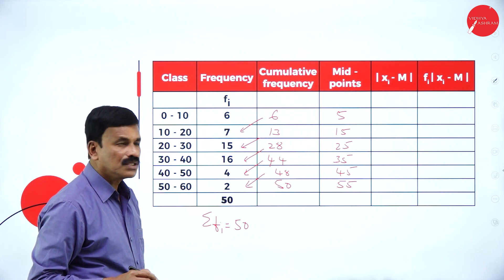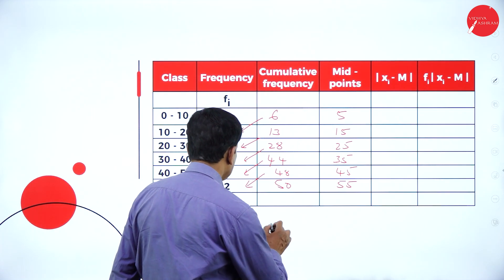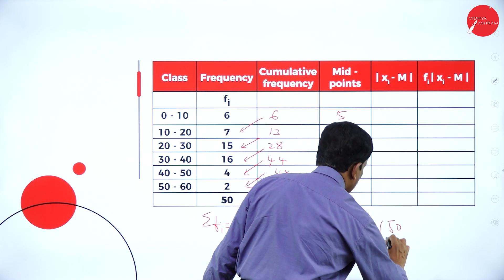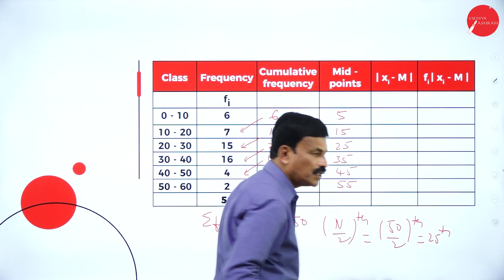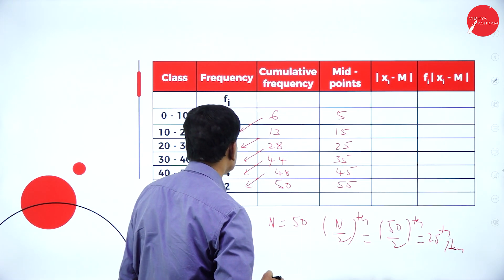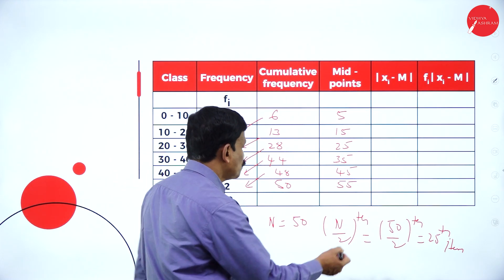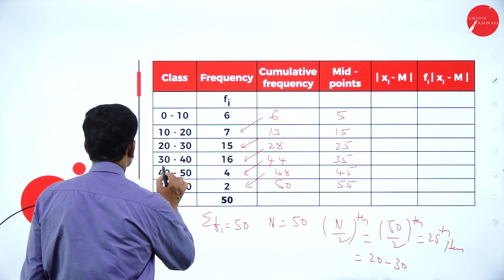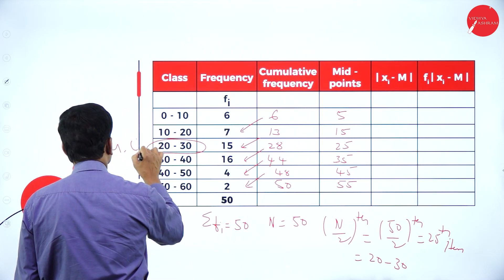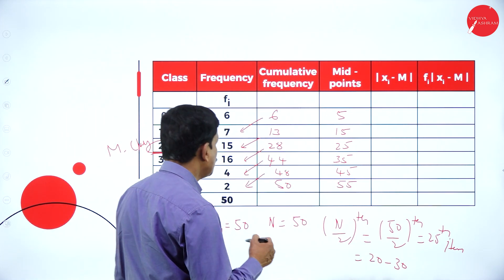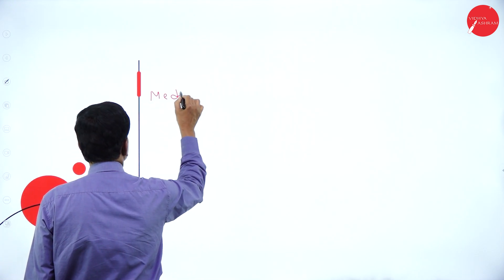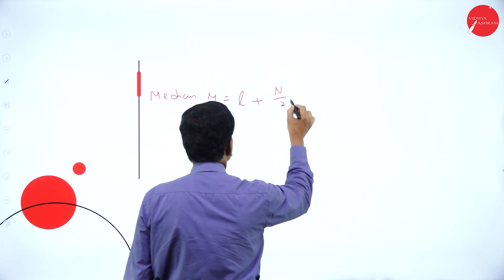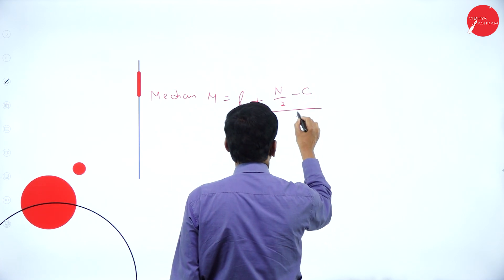Now to find the median, here n is equal to 50. So n by 2 means 50 by 2, that is the 25th item. The 25th item is less than 28, so the 25th item falls in the class 20 to 30. Therefore, this 20 to 30 is the median class. So we need to find out the median using the formula: median M is equal to L plus n by 2 minus C divided by F into H.